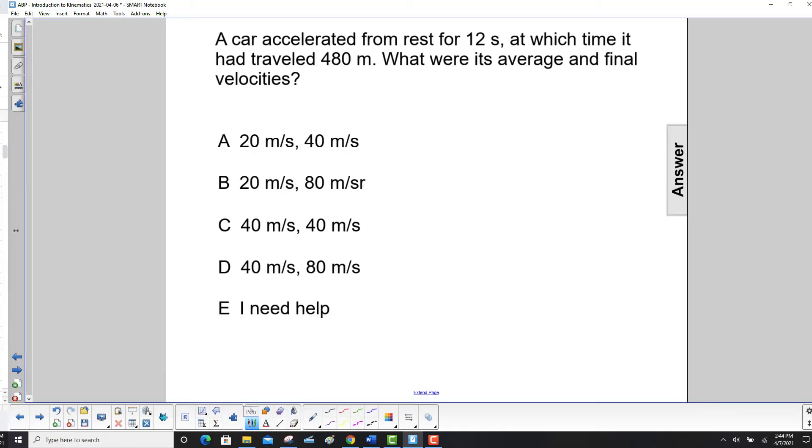A car accelerated from rest for 12 seconds, at which time it had traveled 480 meters. So we have an initial velocity of zero, we have a time of 12 seconds, and a displacement of 480 meters.